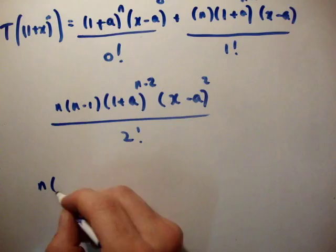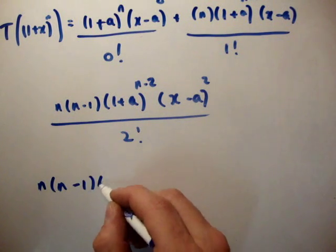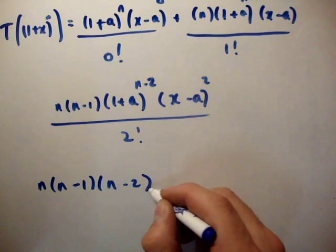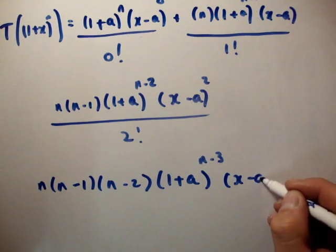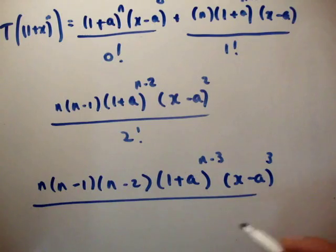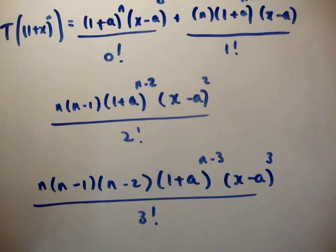And this, I'll do one more, n, n minus 1, n minus 2, 1 plus a to the n minus 3, x minus a to the 3, divided by 3 factorial. So, if you add them all up, you get your Taylor series.